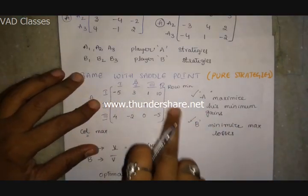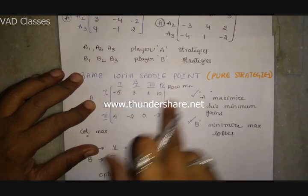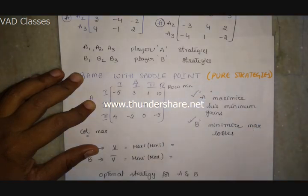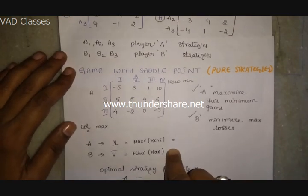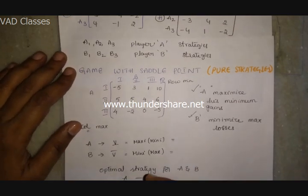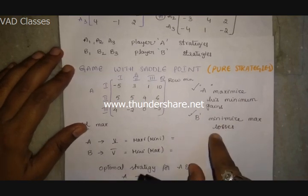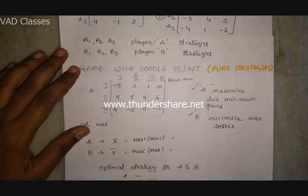First we discuss saddle point in game theory where both players have pure strategies. A saddle point means there is one optimal strategy for each player such that the overall game is decided. If a pure strategy cannot be found, then there will be mixed strategies — maybe two or three strategies are used.